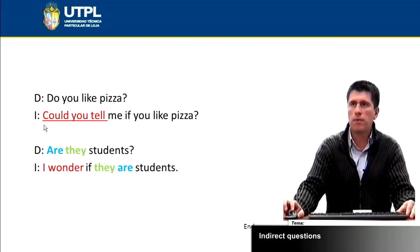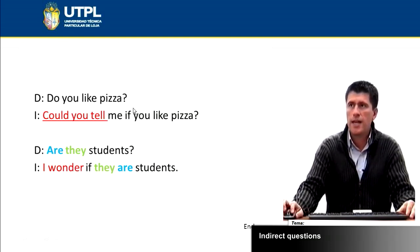Here I have two examples where I'm changing from direct to indirect question. Do you like pizza? Could you tell me if you like pizza? As you can see in the indirect question, I'm getting rid of the auxiliary and I'm using if. Could you tell me if you like pizza?